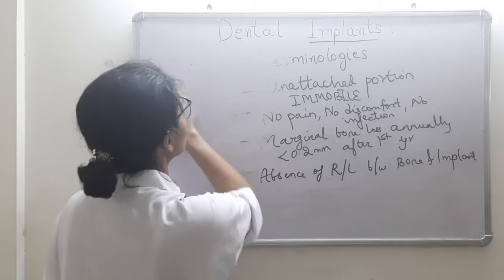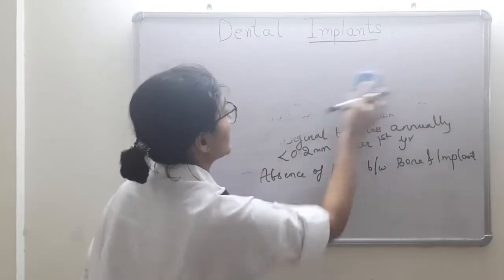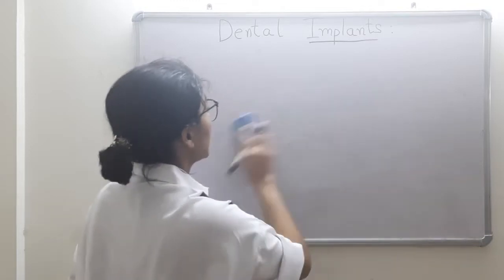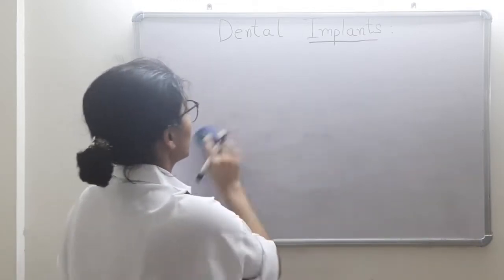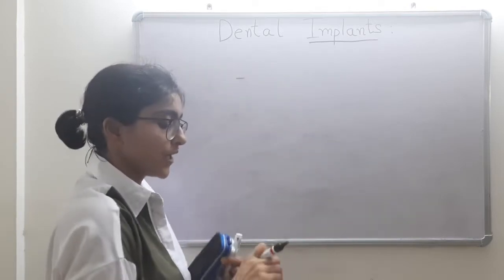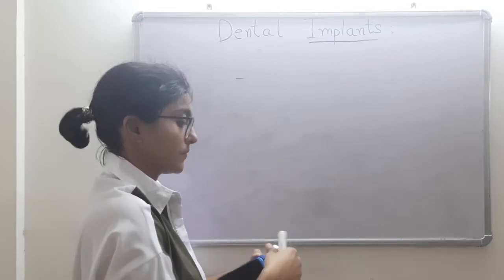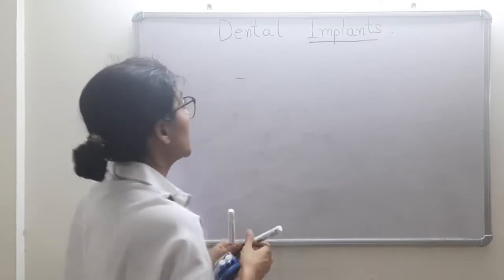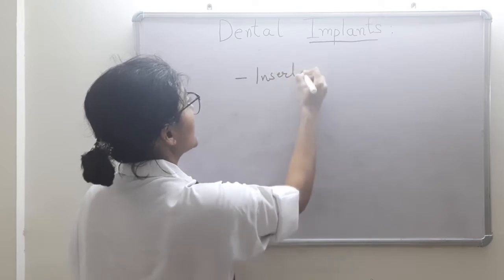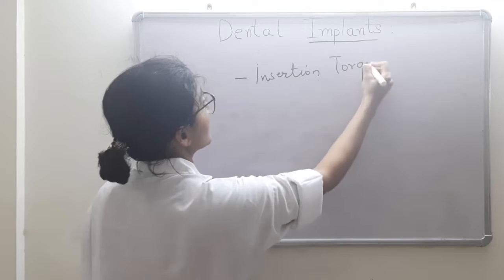Now we will discuss how to determine stability. The first and foremost method is insertion torque. Soon after implant placement, we check the torque; if the required torque value is attained, primary stability is achieved.